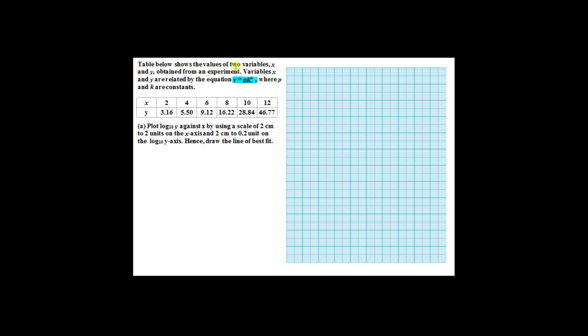Table below shows the values of two variables x and y obtained from an experiment. Variable x and y are related by the equation y equals p k to the power x, where p and k are constants.